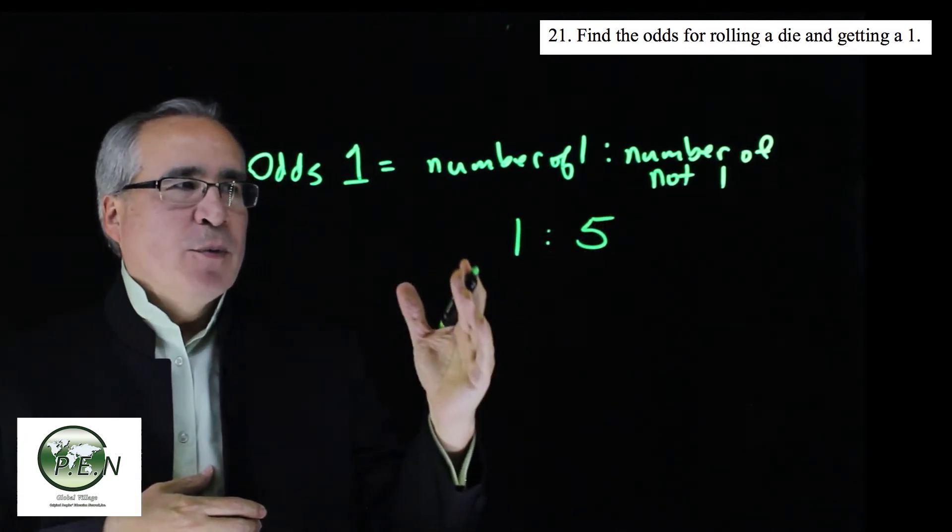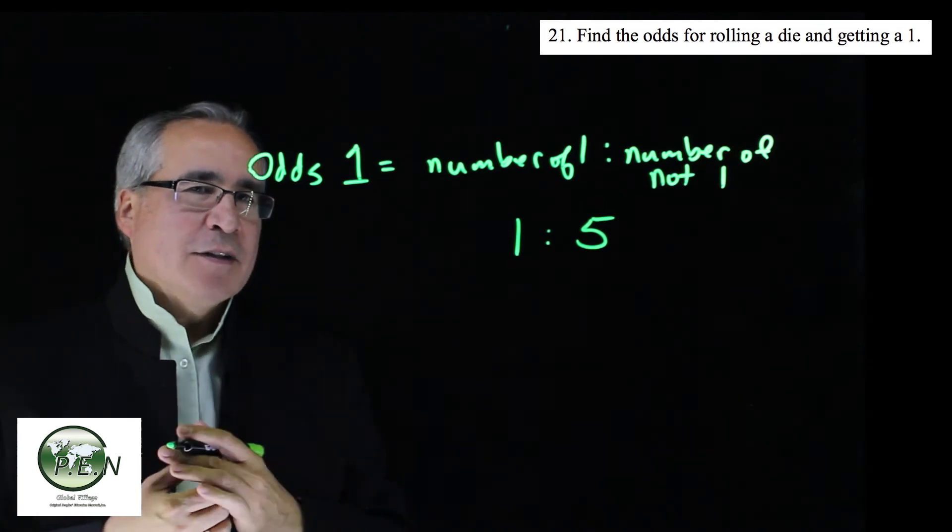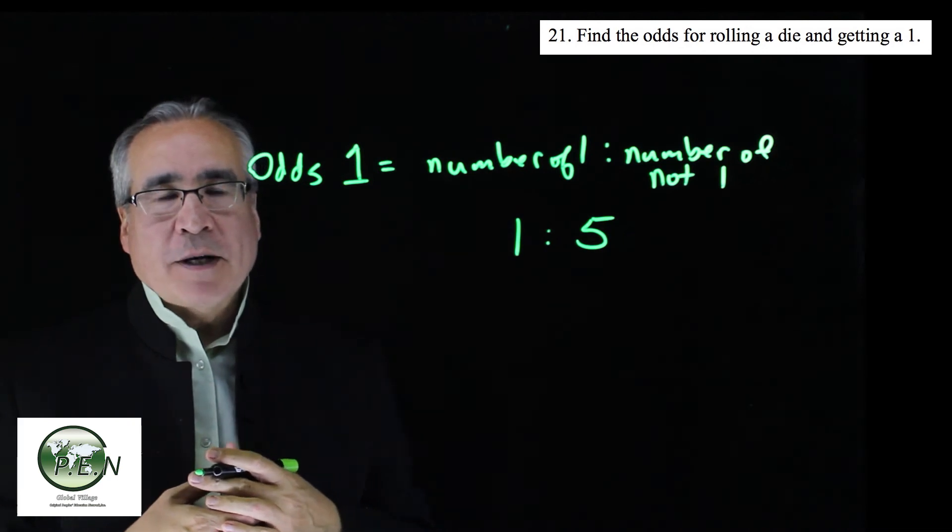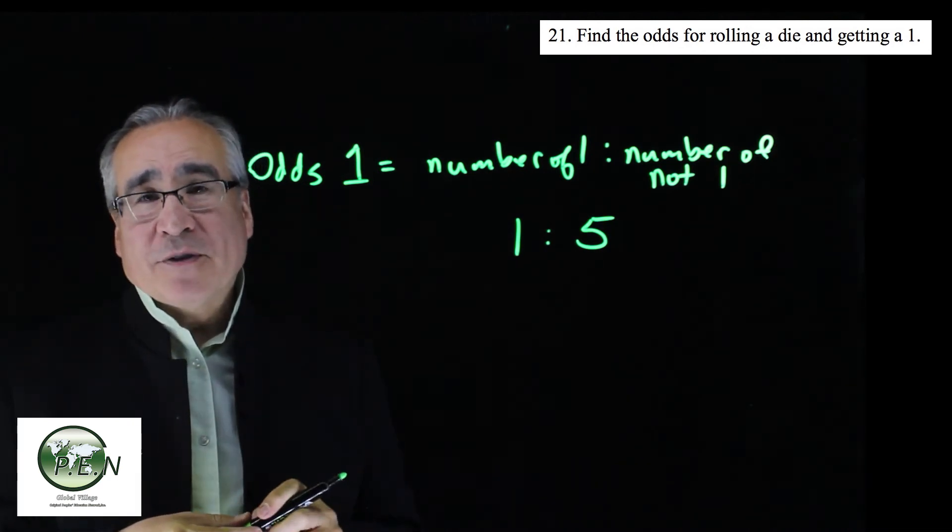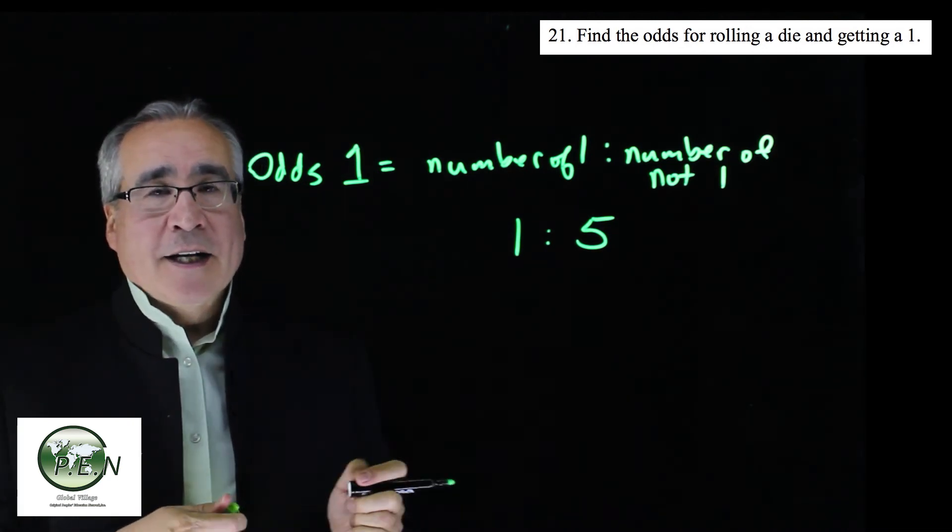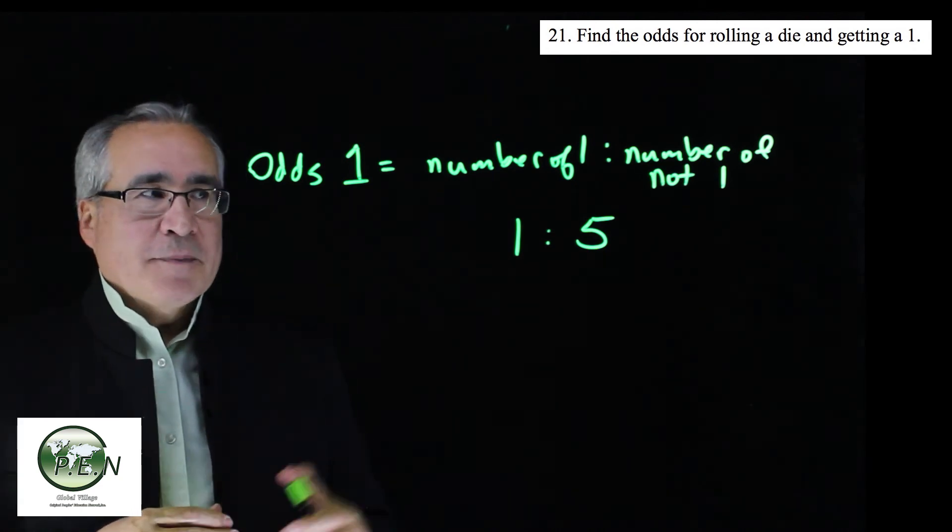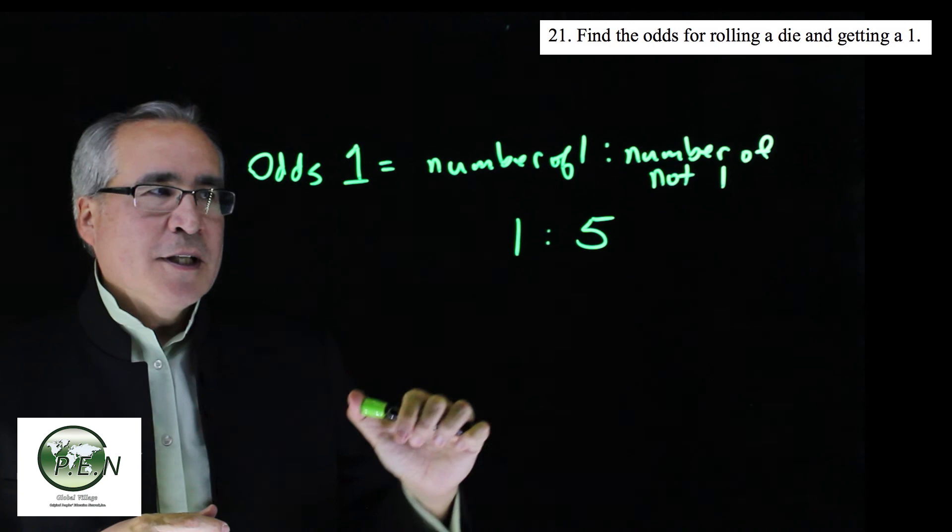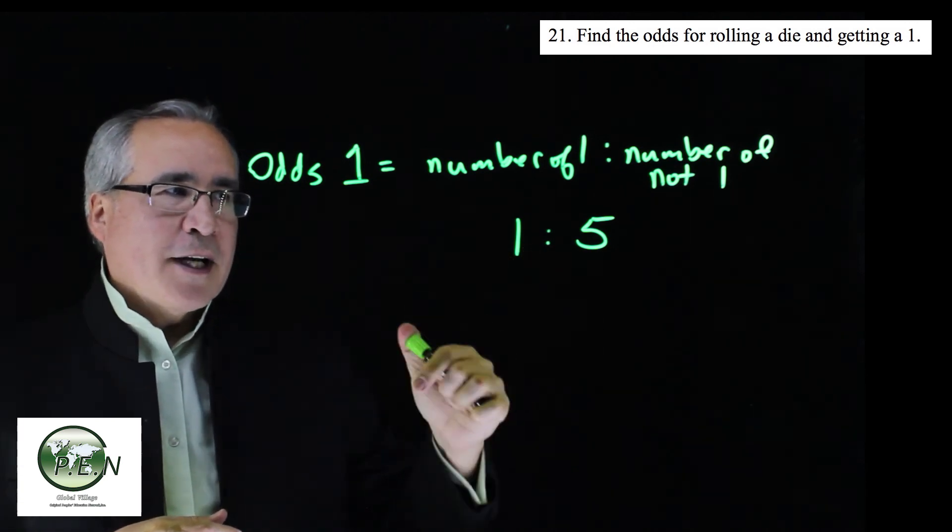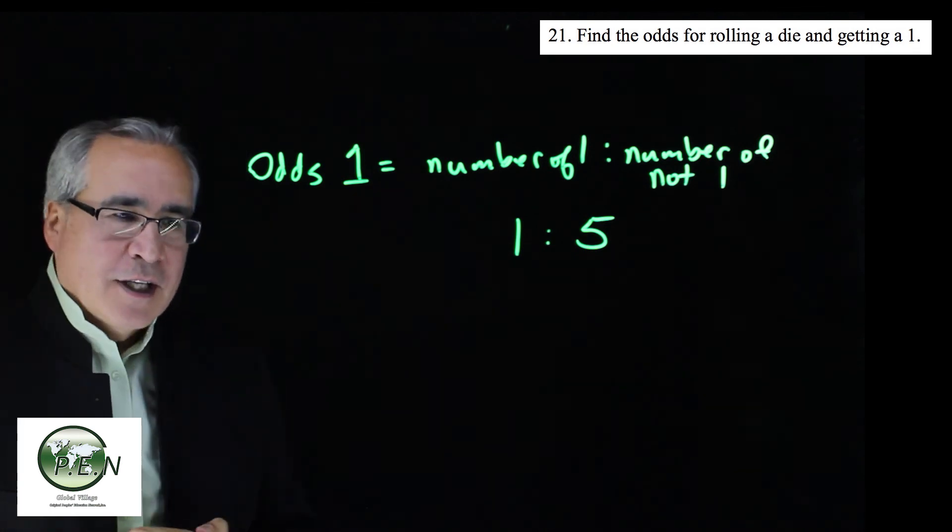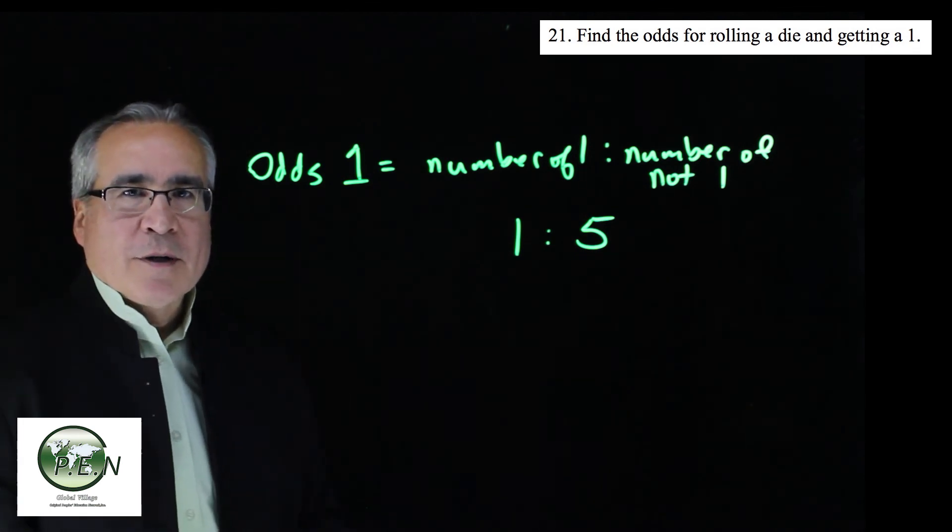So this is the odds, 1 to 5. Let me list it this way. We don't write it as a fraction because that would get us confused with probabilities. But just be careful. Some people do write odds as a fraction, and it can be very confusing. But it should be written either with a colon or with the word to, 1 to 5. So this is 1 win out of 5 losses because those would not be rolling a 1.